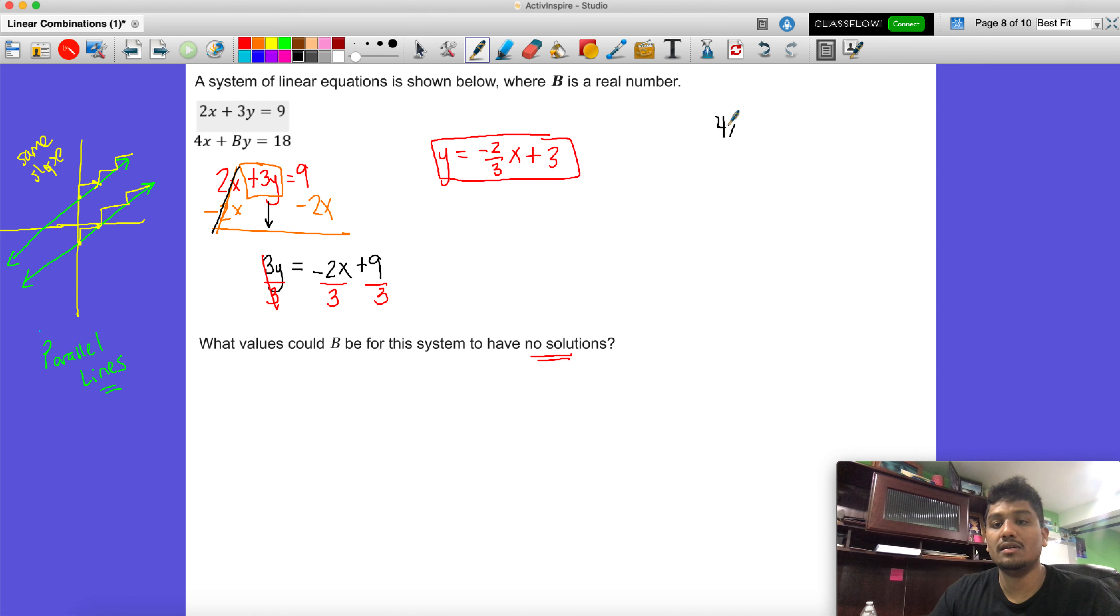Then for the other one, we have 4x plus by equals 18. Now don't worry about that right now. Just focus on what we normally do. Let's get the y by itself. So we're not touching this. We're going to subtract 4x on both sides.